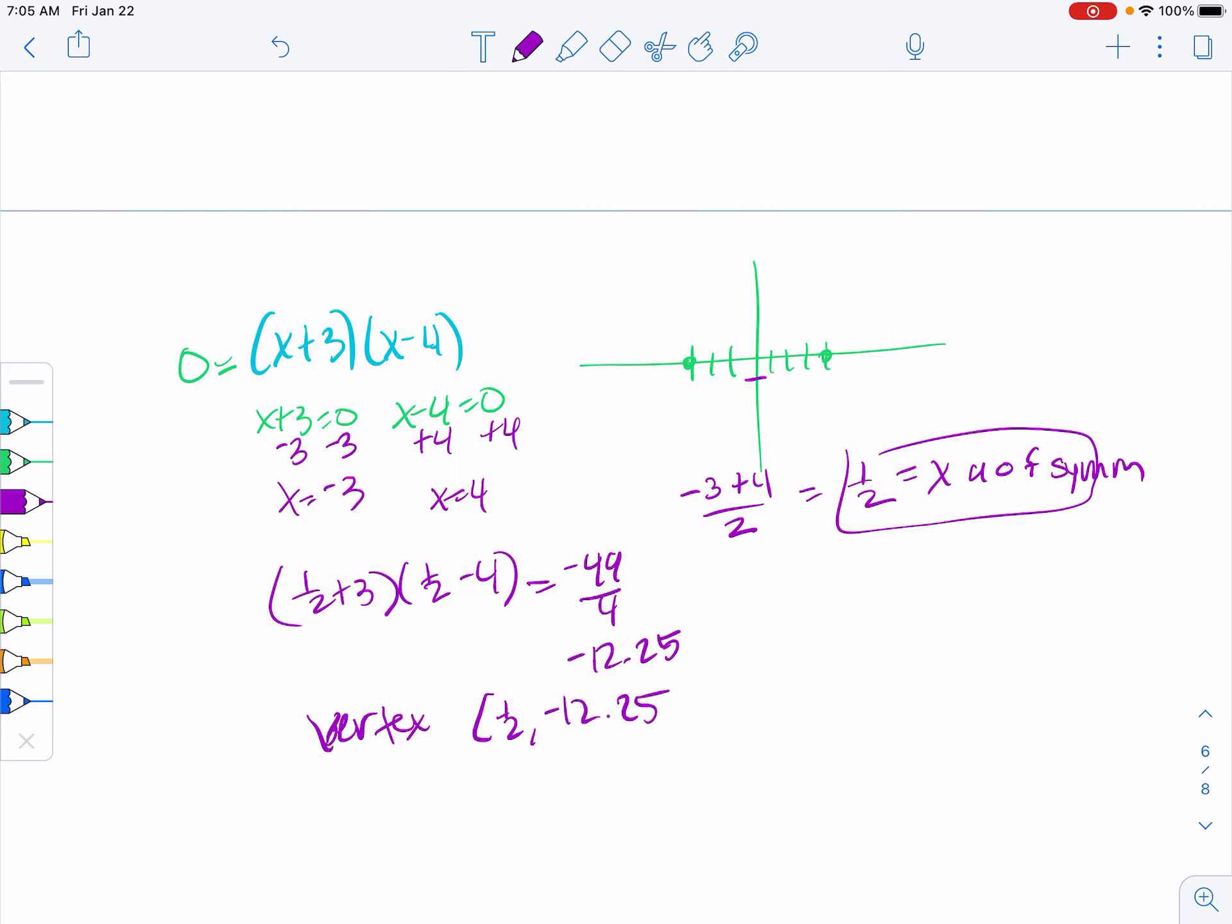So I'm going to go by 2's, 2, 4, 6, 8, 10, 12. Then our vertex is about here. We can make a nice little picture that goes like this. I also know because this a value is positive that it's going to open up. We could also find the y-intercept by plugging in 0. I get 0 plus 3 times 0 minus 4 equals 3 times negative 4, which is negative 12. Notice my y-intercept here is negative 12.